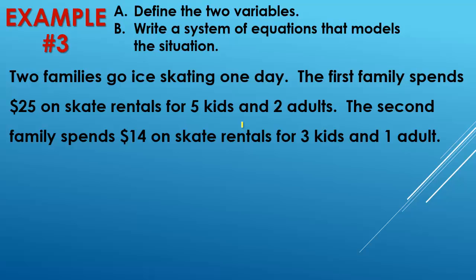Alright, so you could have used a number of different variables. Hopefully you got that there was kids and adults. Again, you could have used X and Y if you had preferred. Alright, so the first family, there were five kids, so we say 5K, and two adults, so we say 2A, and that's equal to $25 that they spent. Next we have three kids and one adult, so we could just say 3K plus A, and that's equal to 14. Good, hopefully you got that. But if not, try and figure out what you did wrong there, and if you still don't understand, ask me questions when you see me.